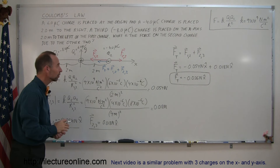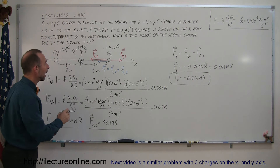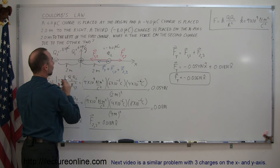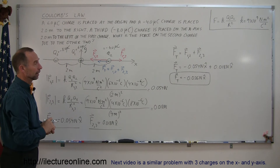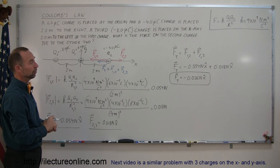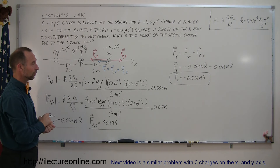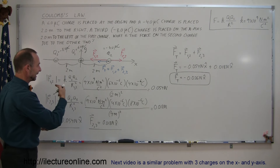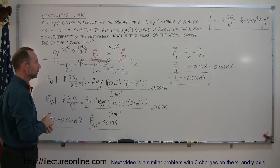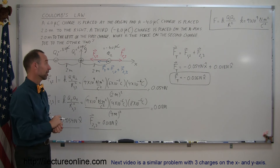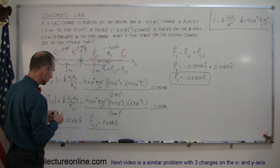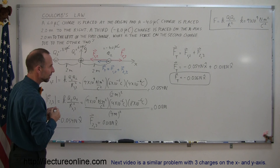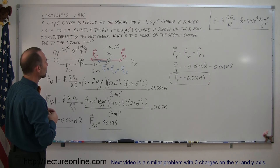That is the resultant force on q2 due to the presence of the other two — magnitude 0.036 newtons, direction along the negative x-axis. That's how you do these types of problems.